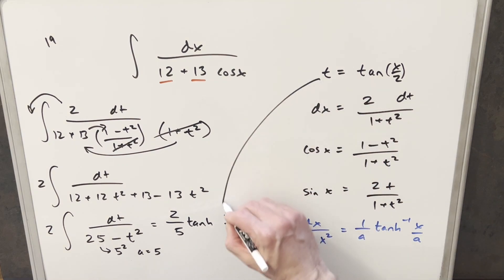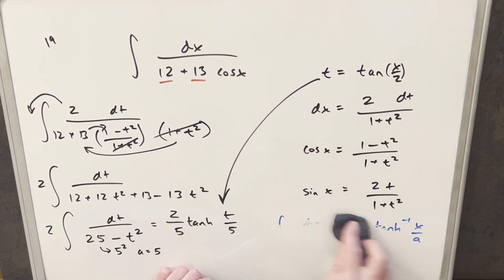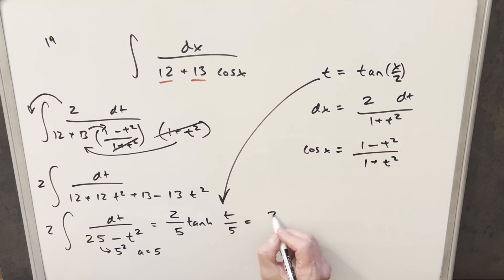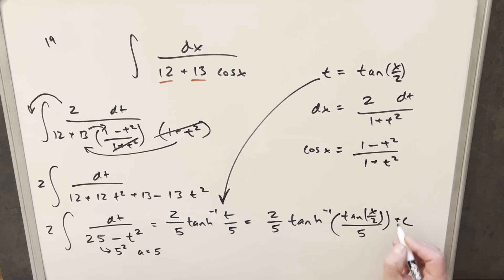So then all we need to do is back substitute in order to finish this off. So let me get some more space. So for my final solution on this, we're just going to have 2 over 5. Sorry, this is inverse tanh right here. Inverse tanh of tan x over 2 all over 5 at a plus c. And that's it.